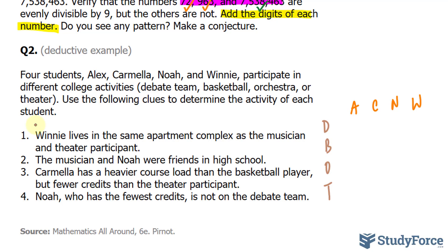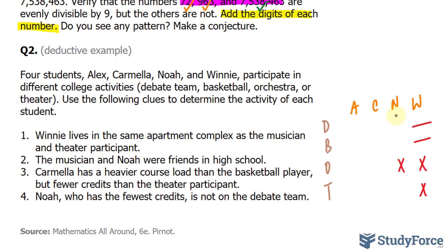Using clue number 1: Winnie lives in the same apartment complex as the musician and theater participant. So we know right away that Winnie is not the musician and she is not the theater participant — I'll put an X for theater and an X for orchestra under Winnie's column. In clue 2, the musician and Noah were friends in high school. Noah is not the musician, so I'll mark an X for orchestra under Noah as well.